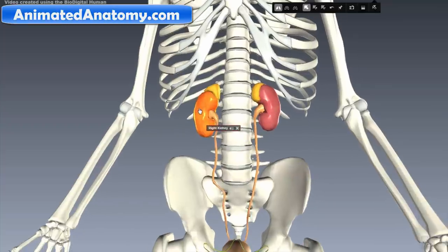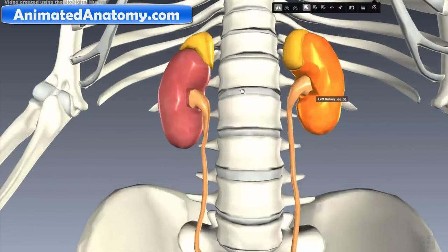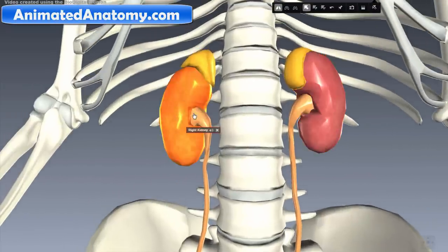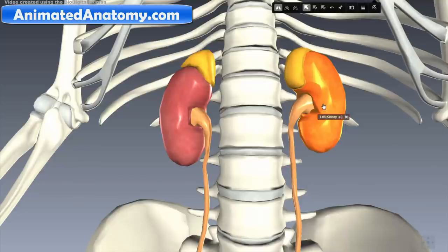Here you have the right kidney and here is the left kidney. You probably can already notice that the right kidney is lower than the left kidney.